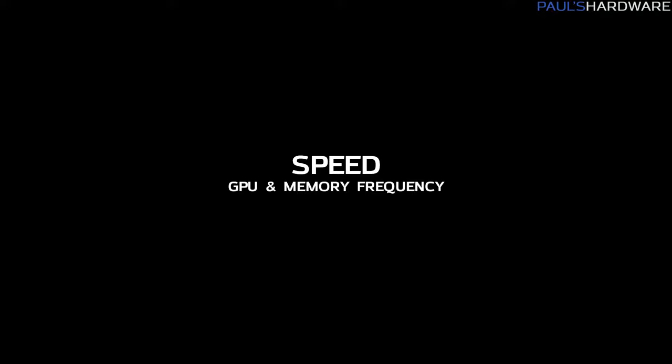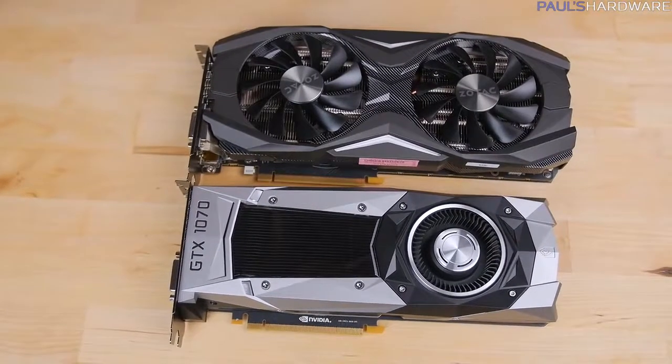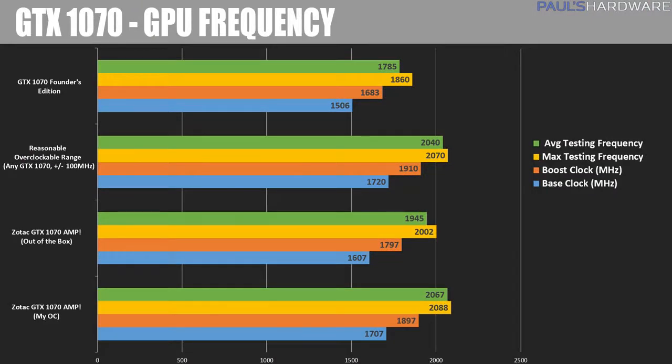Speed, or GPU frequency: raw performance should be number one on this list, but how much can this vary given that we're talking about the same GPU from board to board? With GPUs that have a reference design like the GTX 1070 Founders Edition, we have a starting-off point — the frequency that NVIDIA has decided every single 1070 GPU can run at. The way I look at it, every GPU has a minimum frequency, which for the GTX 1070 is 1506 MHz base clock and 1683 MHz boost clock. Then there is what I call the reasonable overclocking range. For the GTX 1070, about 2 to 2.1 GHz maximum boost is what most people can expect.